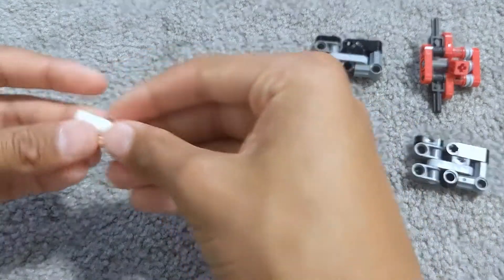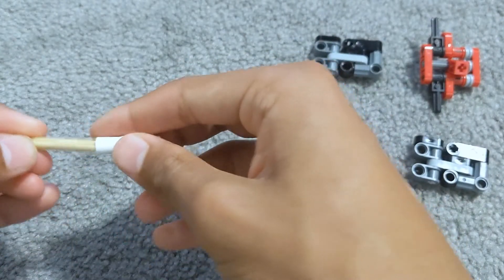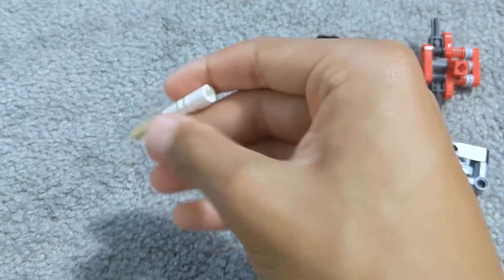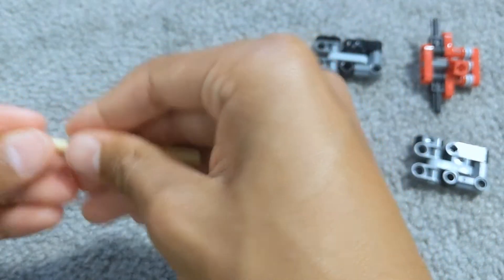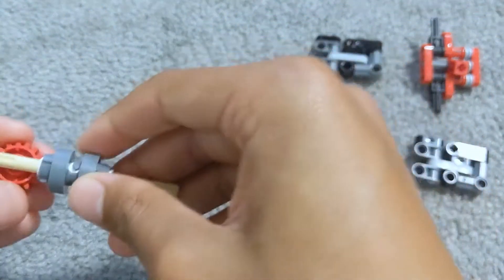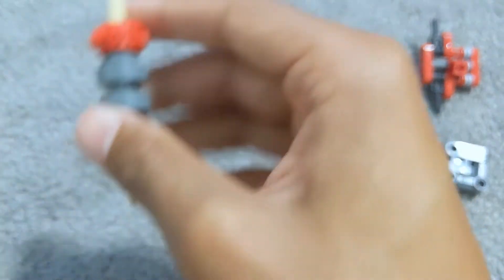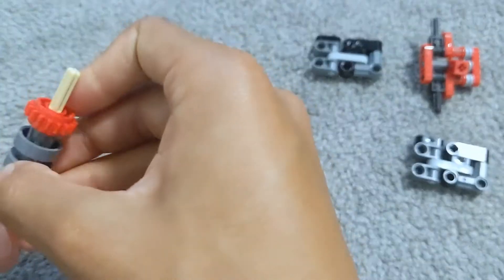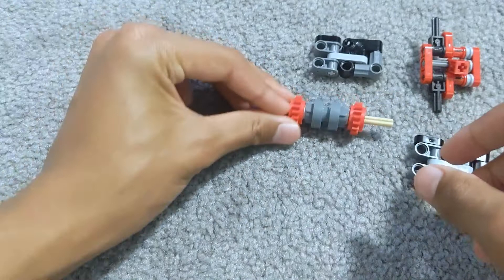You get these, put them together like so. Put this through the middle and then both these reds on either side, and put it to the side.